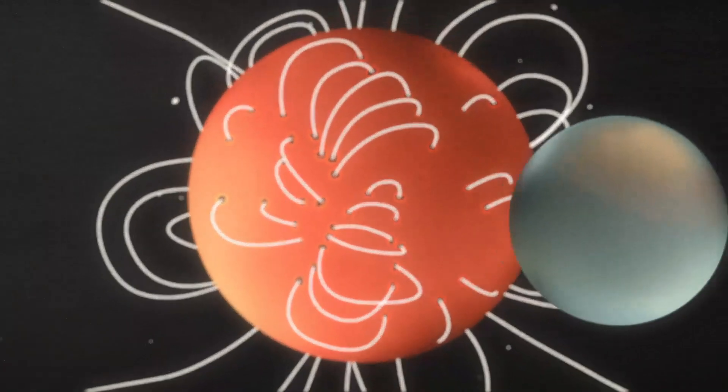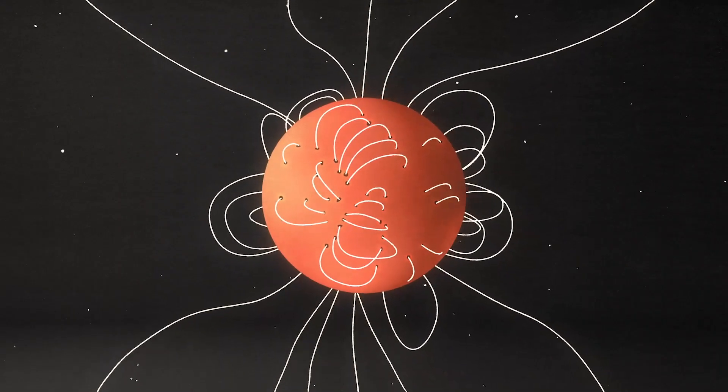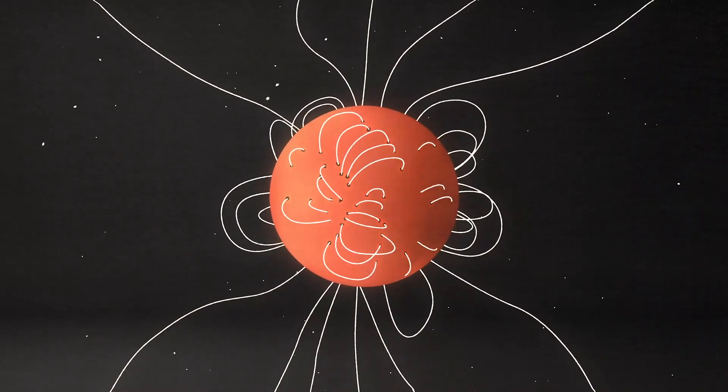Like Earth, the sun has a magnetic field with a north and south pole. But unlike Earth, the sun's magnetic field becomes extremely complex.